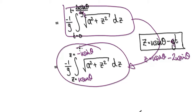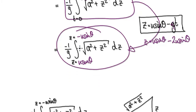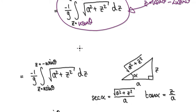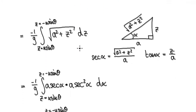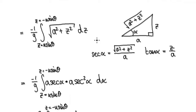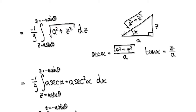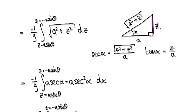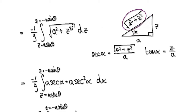So this integral now becomes this. To integrate it, we need to use trigonometric substitution. There is a Pythagorean structure here — you've got squared, squared, and then a square root — so create a right-angle triangle such that if the opposite is Z and the adjacent is A, then the hypotenuse is root of A squared plus Z squared.